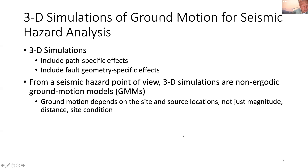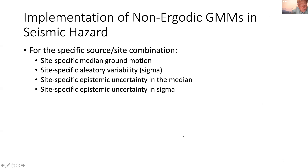In that framework, if we have a non-ergodic ground motion model, we need four things: the site-specific median, the site-specific aleatory variability — that's our standard deviation normally in the ground motion model — and then also the epistemic uncertainties in the median and the epistemic uncertainty in the value of the standard deviation. So we have to have those four things.